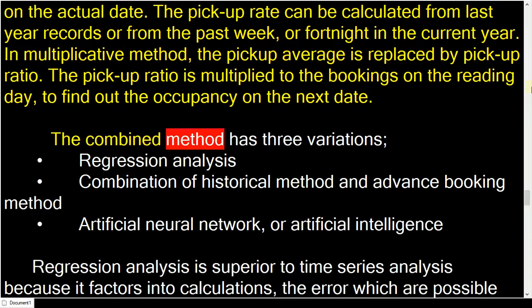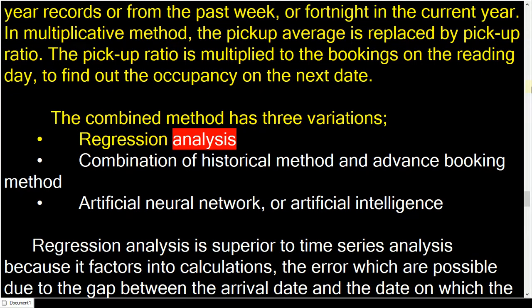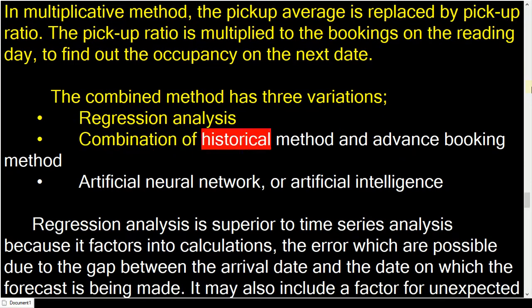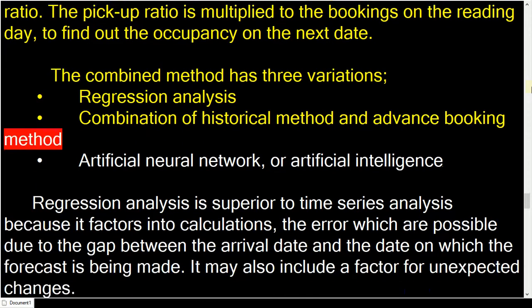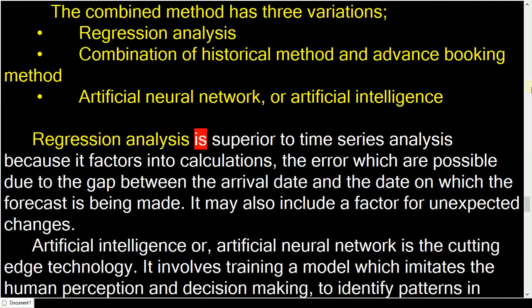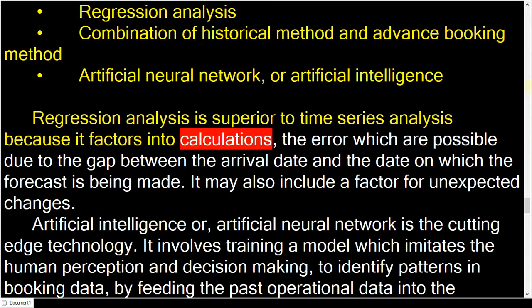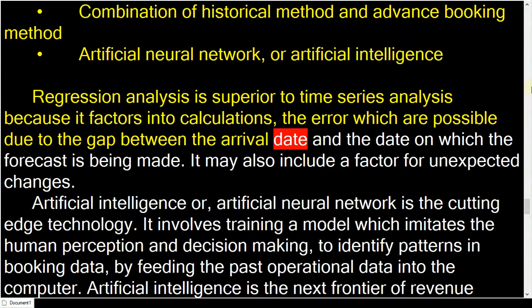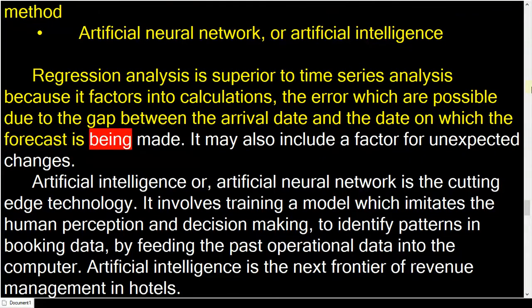The combined method has three variations: Regression Analysis, a combination of the historical method and advanced booking method, and Artificial Neural Network or Artificial Intelligence. Regression analysis is superior to time series analysis because it factors into calculations the error possible due to the gap between the arrival date and the date on which the forecast is being made. It may also include a factor for unexpected changes.